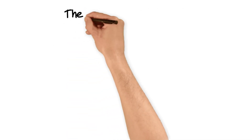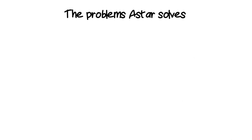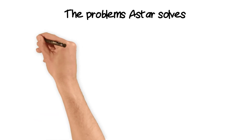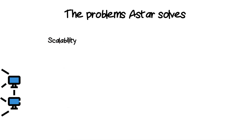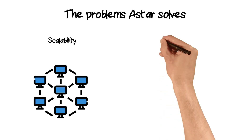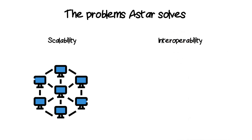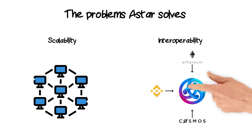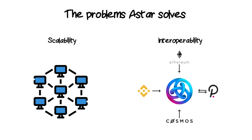Since Astar is a smart contract platform, we consider the issues from both users' and developers' sides. Users will receive solutions to scalability and interoperability problems. For scalability, users will be able to perform more TPS at noticeably lower fees with faster transaction finality. For interoperability, Astar will allow moving value from one L1 blockchain to another using bridges — for example, exchanging ETH to BTC — without relying on centralized exchanges.